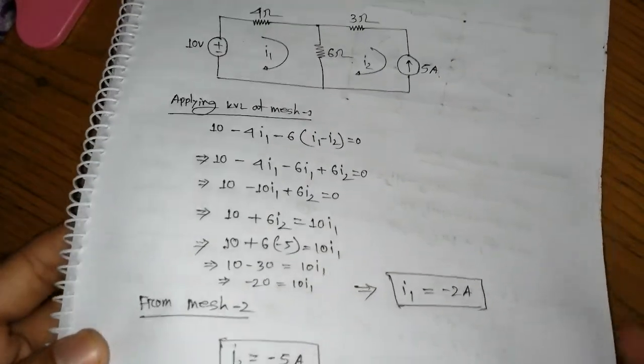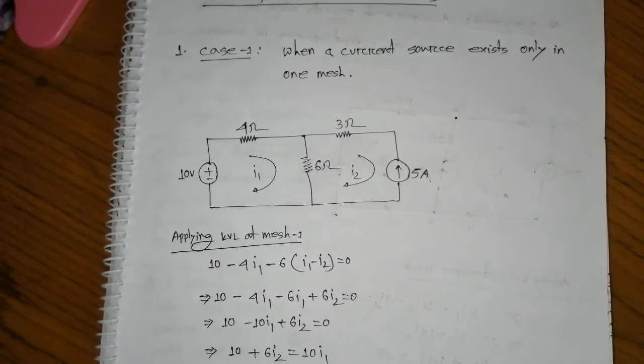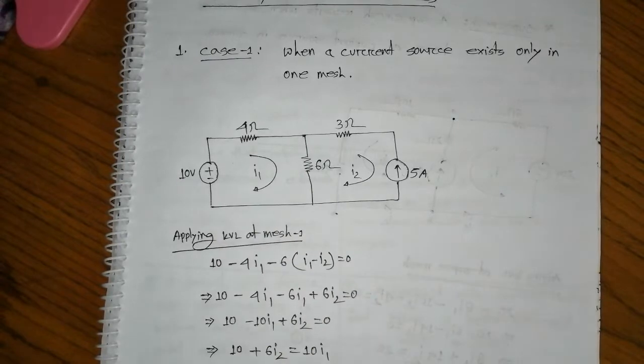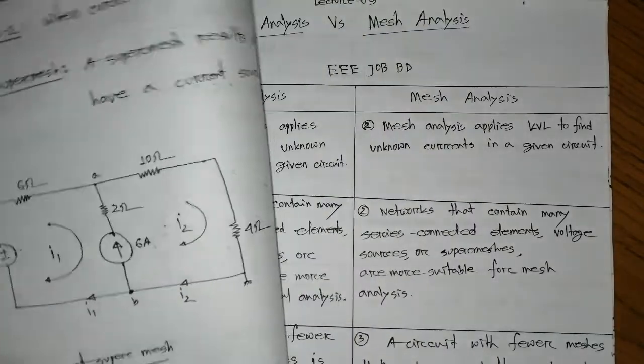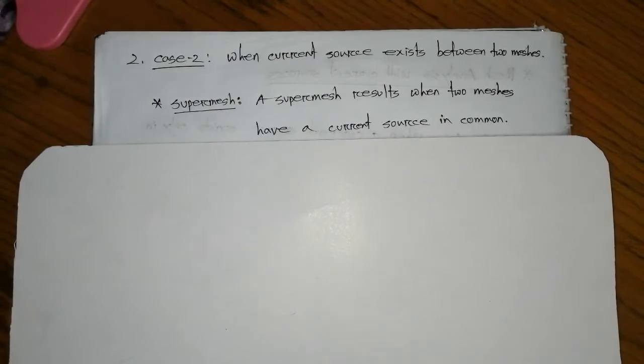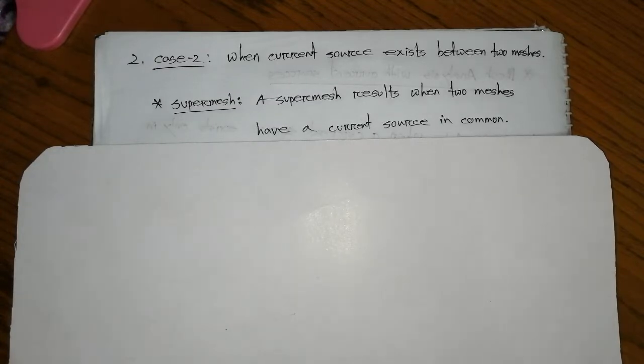This result is very clear. The current source was found in only one mesh in this case. When the current source is common between two meshes, the situation changes — the current source then cannot have KVL applied directly across it.